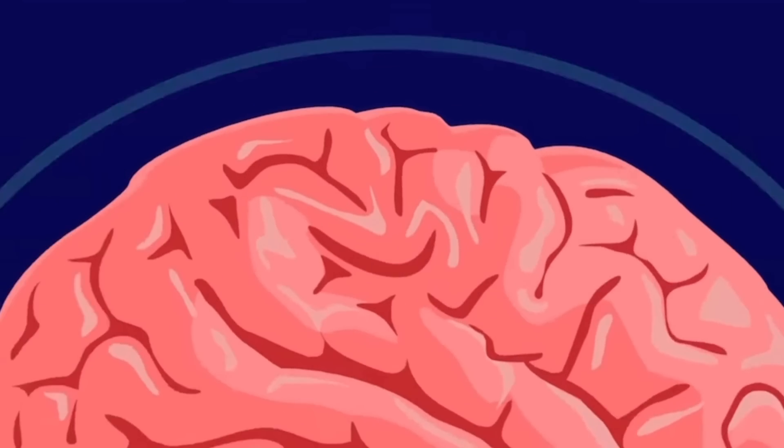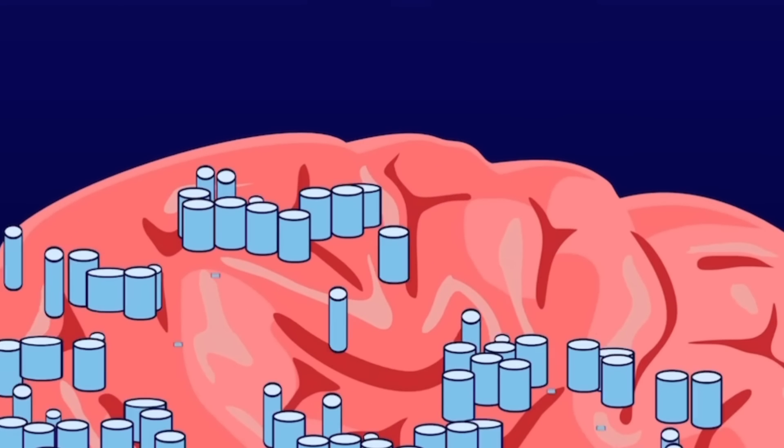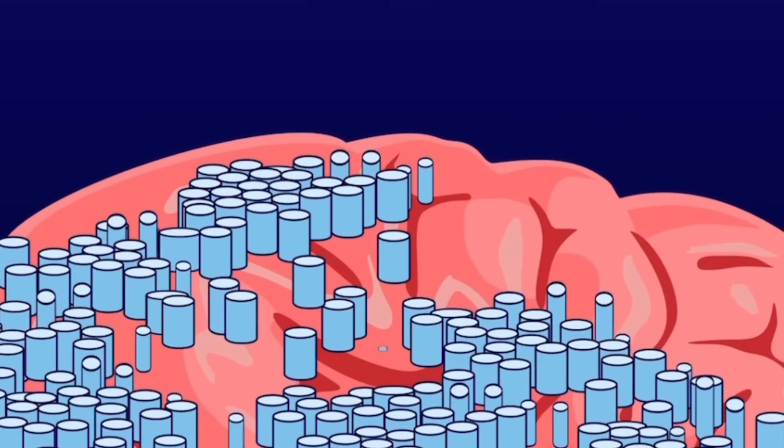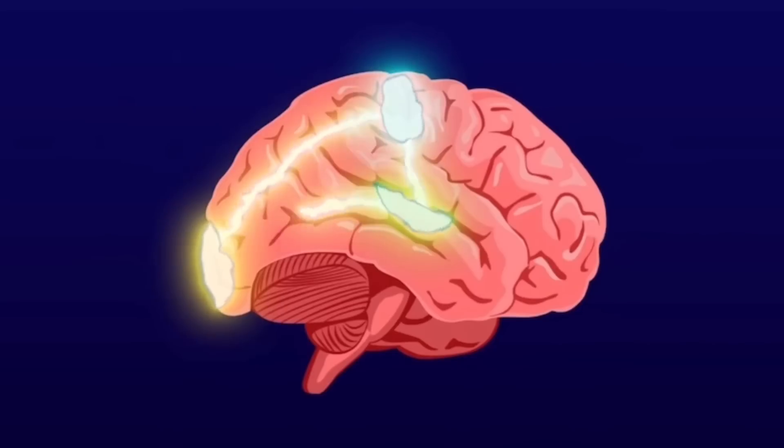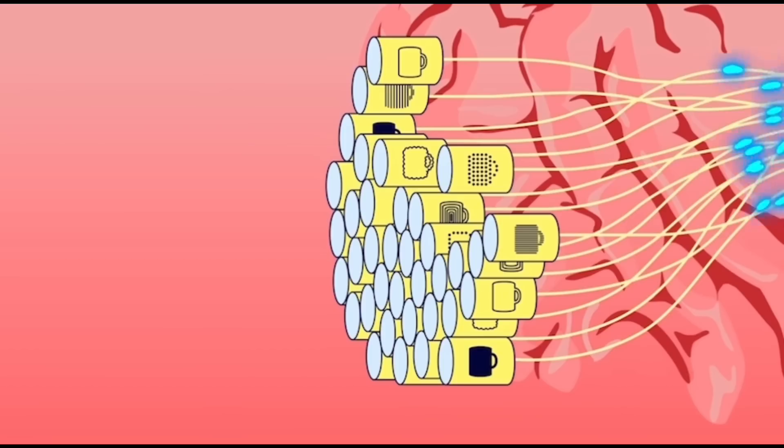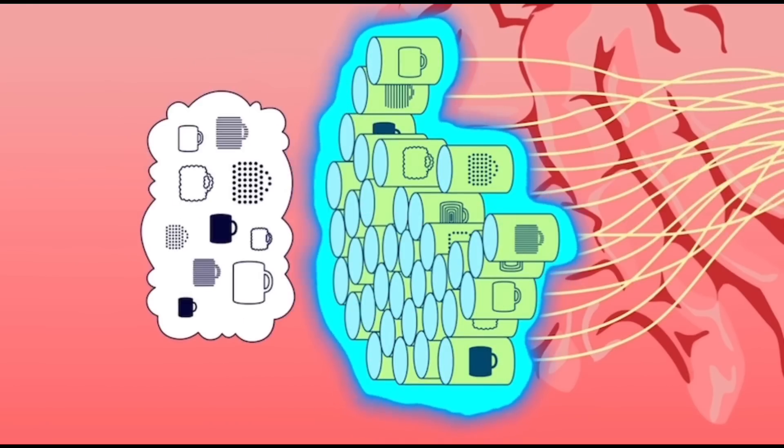At a high-level view, our brain acts as a distributed voting system consisting of thousands of columns that build complete models of our world. Each column acts as a mini-brain, references its models, and votes in order to make predictions.